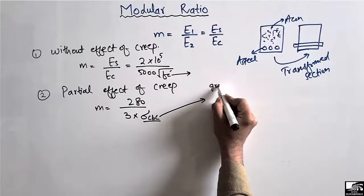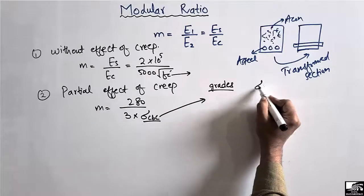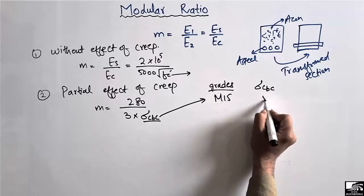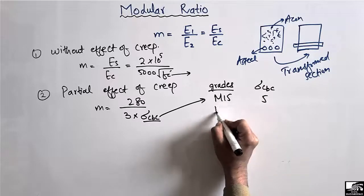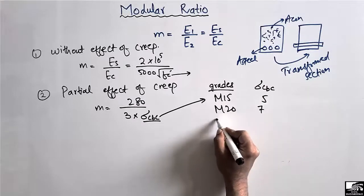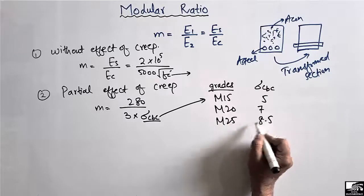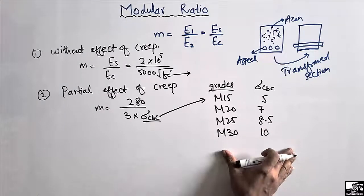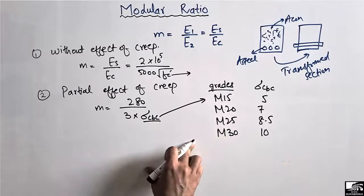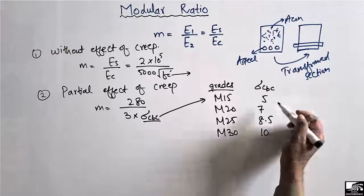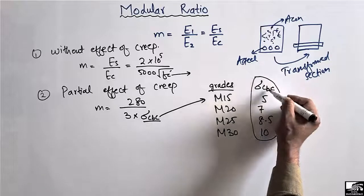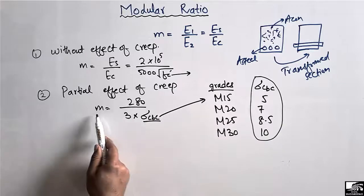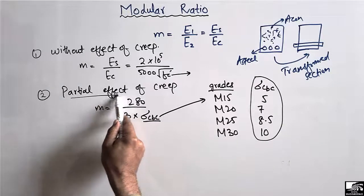For different grades of concrete, the σcbc values are as follows: for M15, σcbc = 5; for M20, σcbc = 7; for M25, σcbc = 8.5; and for M30, σcbc = 10. These values can be found in a table in IS 456:2000, which lists σcbc for different concrete grades.